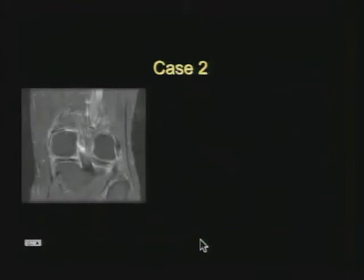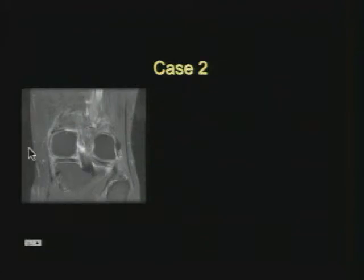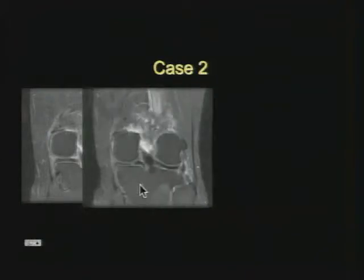Now we're going to the knee, looking at coronal images. There's a dark background suggesting fat suppression, a STIR image, or possibly gradient echo. We see bright fluid and the background well, so this is probably a fat-suppressed proton density or T2-weighted sequence. It looks pretty good — here's the fibula, so we know we're lateral.